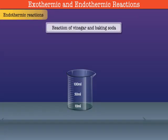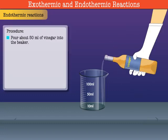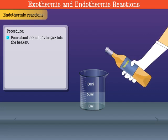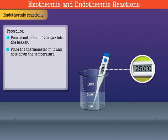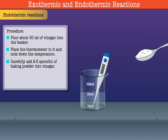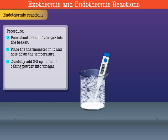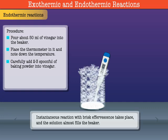Let us understand another reaction where there is absorption of heat. Pour about 50 ml of vinegar into a beaker. Place a thermometer in it and note down the temperature. Now carefully add 2 or 3 spoonfuls of baking powder into the vinegar. An instantaneous reaction with brisk effervescence takes place and the solution almost fills the beaker.